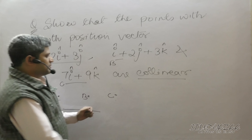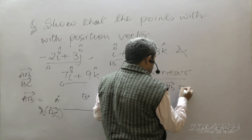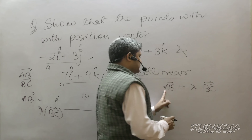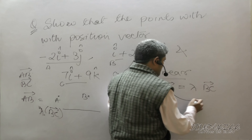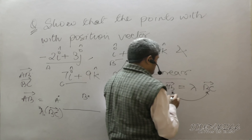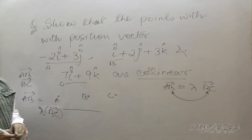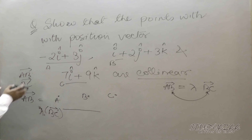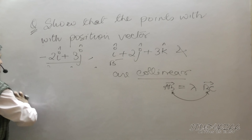In vector concepts, if AB equals some scalar multiple of BC, then AB and BC are parallel. But since B is a common point, parallel vectors sharing a point lie on the same line — so they are collinear. There are two approaches, and I will demonstrate both.